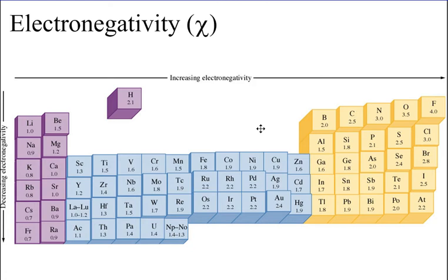Electronegativity, symbolized by the Greek letter chi (not x), is the ability of an atom in a molecule to attract shared electrons to itself. You can think of it like a tug of war. The greater the electronegativity, the more it will pull on and attract those electrons towards it.